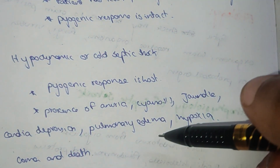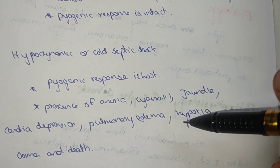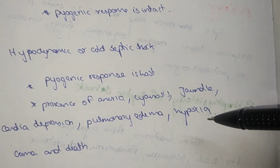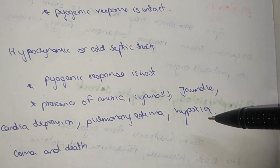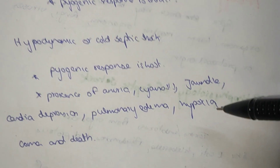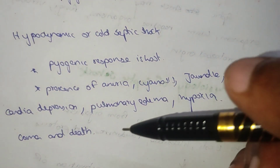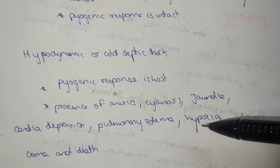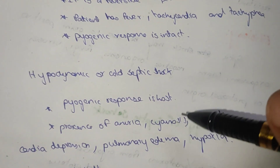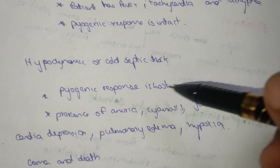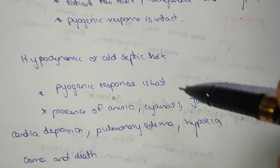Cold septic shock also presents with cardiac depression, pulmonary edema, hypoxia, coma, and death. This is the hypodermic or cold septic shock stage.